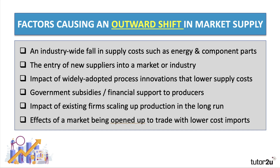Here are six factors that could cause an outward shift — an increase — in market supply. First, an industry-wide fall in supply costs: for example, a fall in the cost of key energy sources such as oil and gas, or a fall in the price of essential component parts used by most producers — such as in car manufacturing, steel production, or consumer electronics.